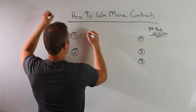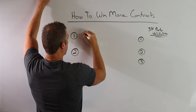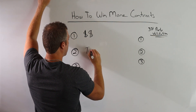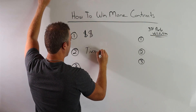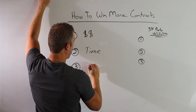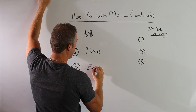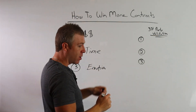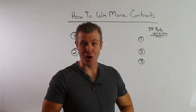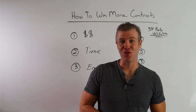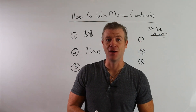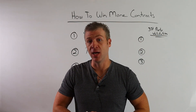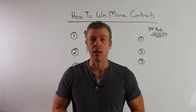I'm going to write these down: money, time, and emotion. People make decisions based off money, time, and emotion.